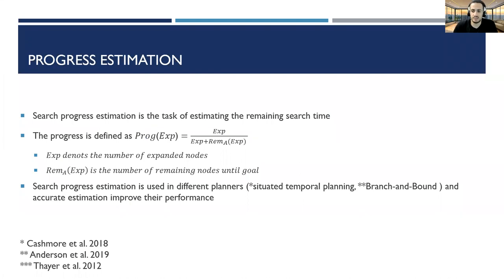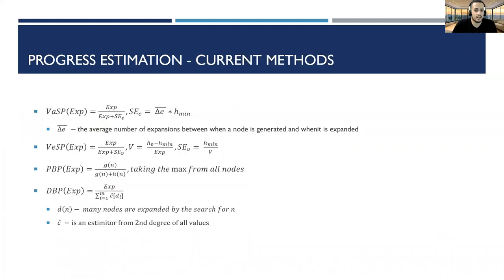Search progress estimation is used in different temporal planners like situated temporal planning and branch-and-bound. Currently in the literature there are four main algorithms: VASP, VESP, BBP and DBP. VASP uses the average number of expansions between nodes. VESP calculates velocity defined as H0 minus Hmin divided by the number of nodes expanded. BBP assumes the heuristic is accurate and uses G value divided by G plus H. DBP assumes the search acts like an equation of second degree.